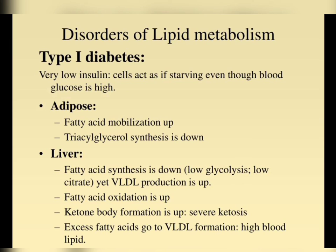Regarding disorders of lipid metabolism: in Type 1 diabetes, with very low insulin, cells act as if starving even though blood glucose is high. In adipose tissue, fatty acid mobilization is up and triglyceride synthesis is down. In the liver, fatty acid synthesis is down (low glycolysis, low citrate), yet VLDL production is up, fatty acid oxidation is up, and ketone body formation is up — a condition of high ketone body formation called severe ketosis. Excessive fatty acids go to VLDL formation, causing high blood lipids.